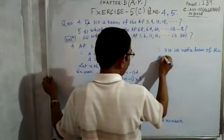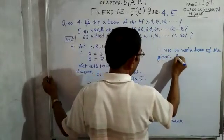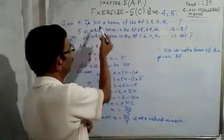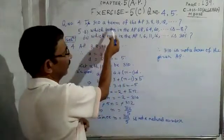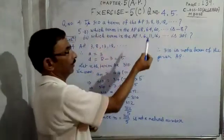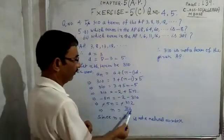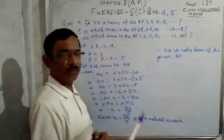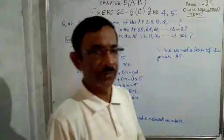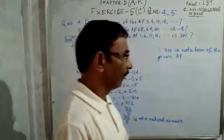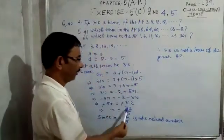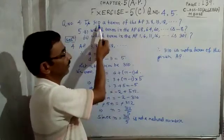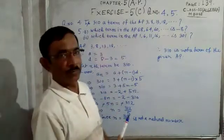To summarize: if a value is a term of the AP, the corresponding value of n must be a natural number. If n turns out to be a fraction, the value is not a term of that AP.